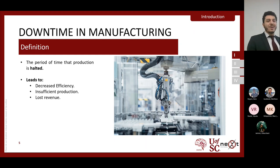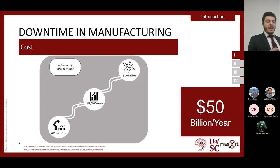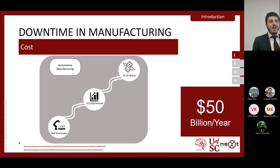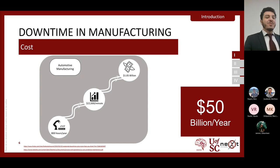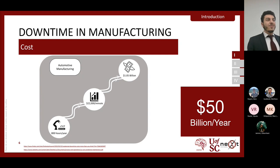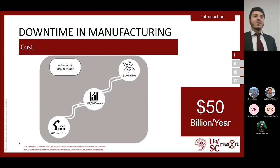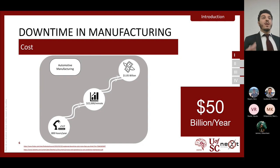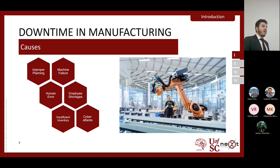How much lost revenue are we really talking about? Looking specifically at the automotive manufacturing industry, there are about 800 hours of downtime per year per automotive manufacturing facility. Taking into account that each minute of downtime can cost up to $22,000 of lost revenue, we're talking about about $1.05 billion of lost revenue throughout a calendar year — and that's just automotive. If you look at manufacturing as a whole, this can lead up to $50 billion of lost revenue per year.